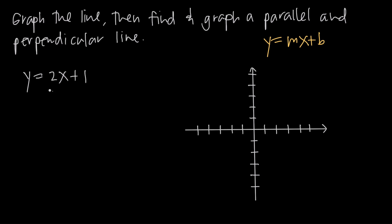We're going to start with this equation. It's already in slope-intercept form. Remember that slope-intercept form is y equals mx plus b, where m is the slope of the line and b is the y-intercept, meaning the point at which the graph crosses the y-axis. Looking at our equation, we can see that m is equal to 2, so the slope of our line is 2, and the y-intercept is equal to 1.